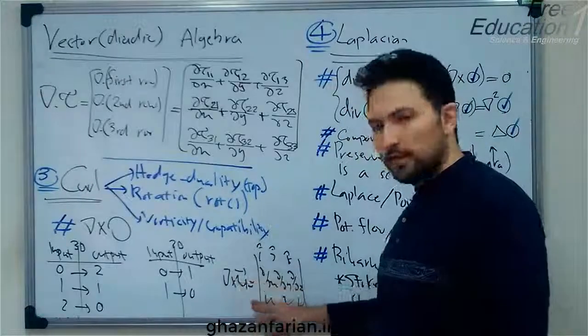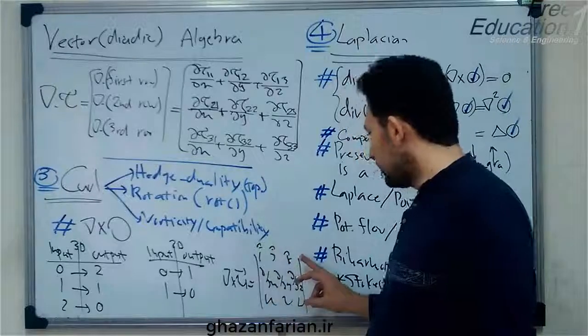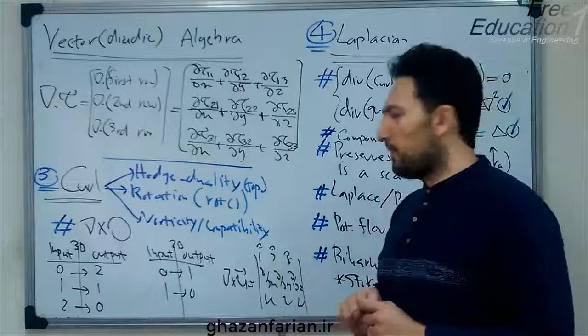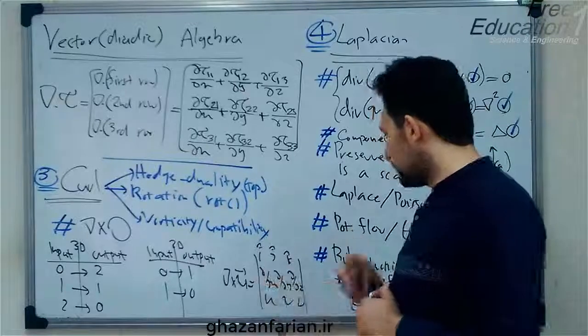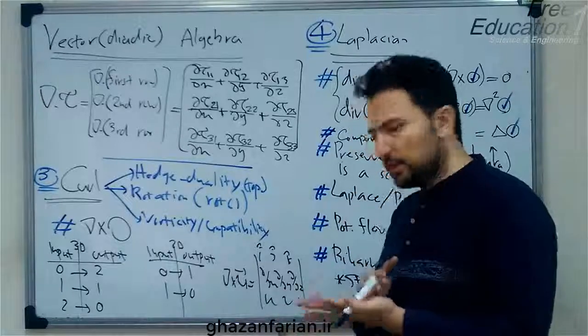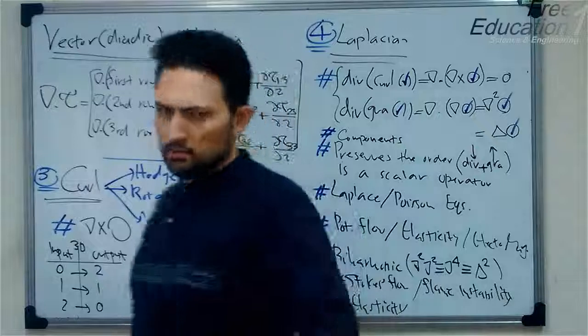And again, you know how to compute the curl of a vector. The curl of a vector is the determinant of this matrix. The first row is composed of unit base vectors. The second row are partial derivatives or the del operator. And the third row is the vector, which is for example the velocity.